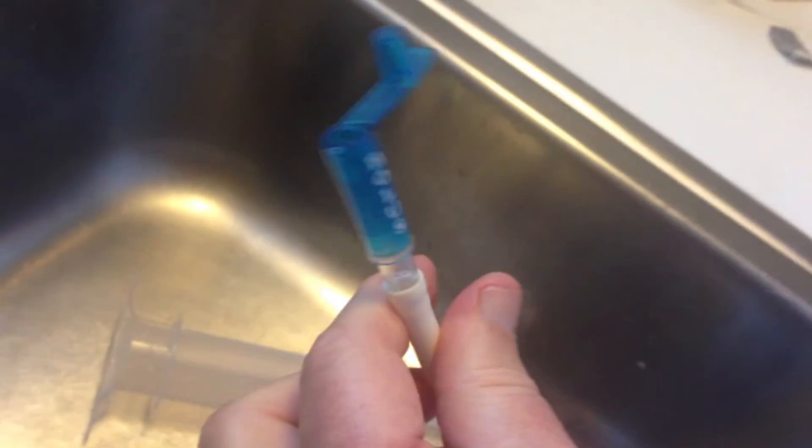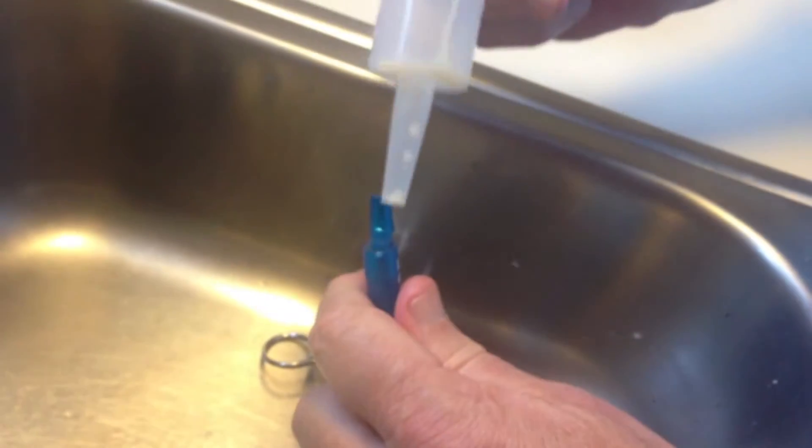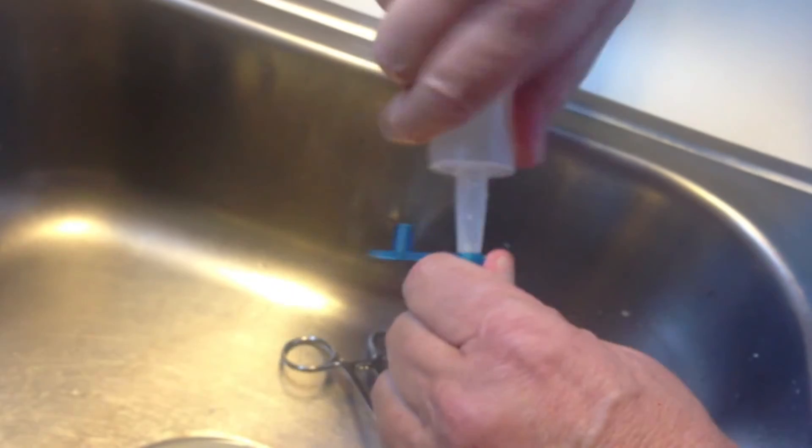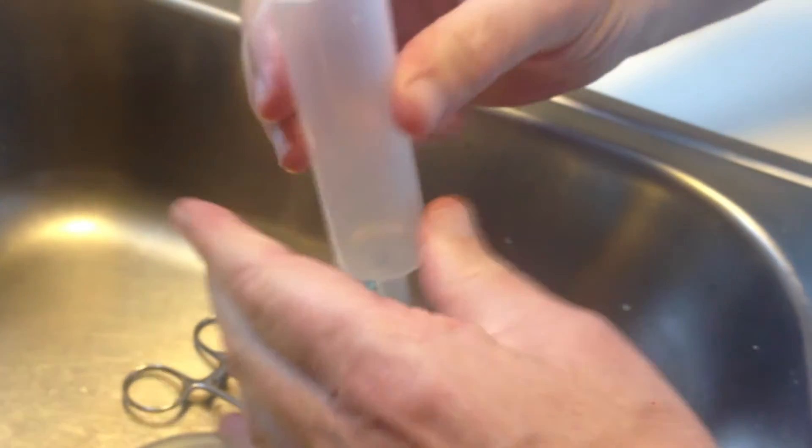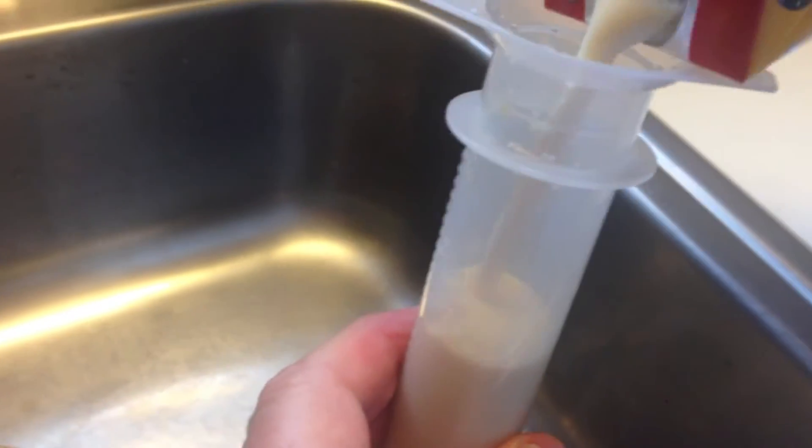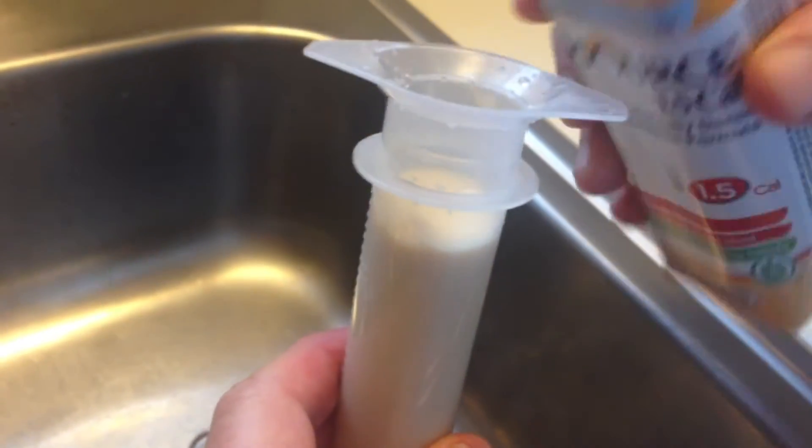Hemostat off the tube, connect it to the standard catheter tip syringe, fill it with 60 cc's of formula.